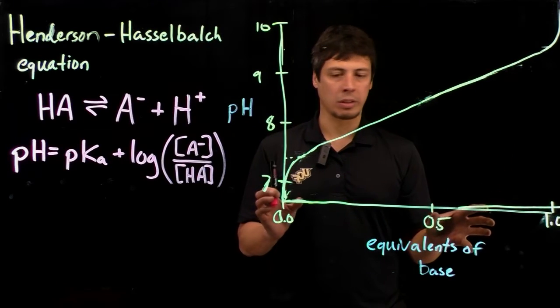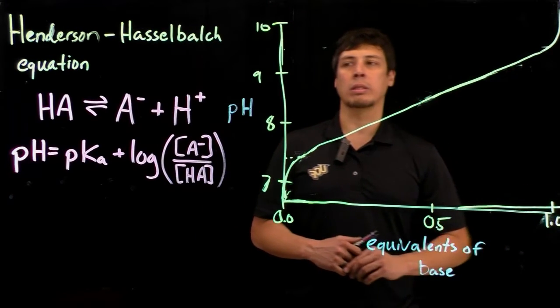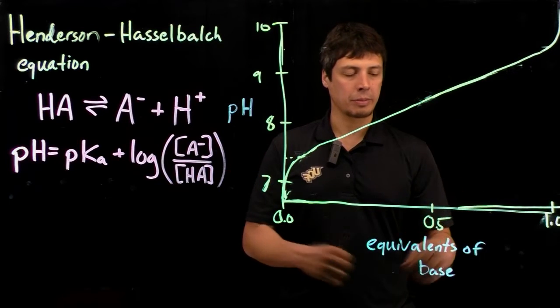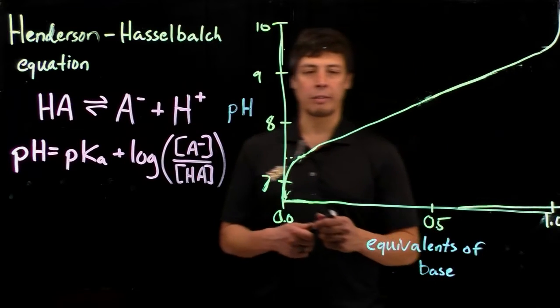We have the equivalence points, and there's an equivalence point at zero and an equivalence point at one. That's when the base is at one equivalent with the weak acid.